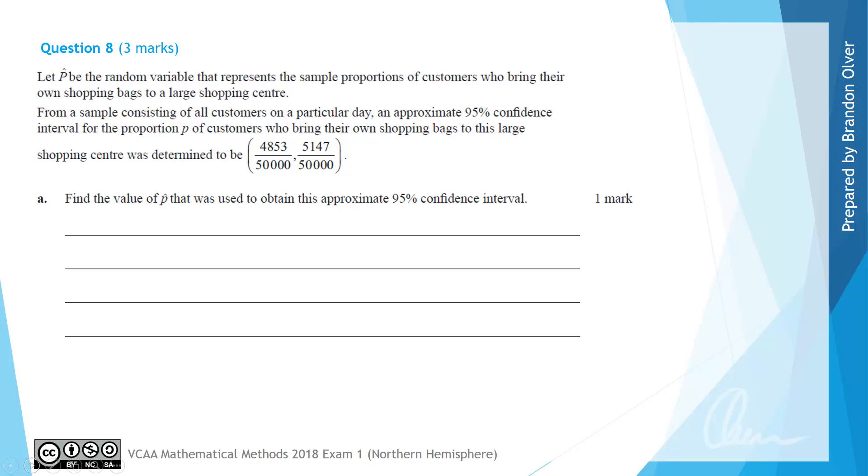For Part A, we are asked to find the value of P hat that was used to obtain this approximate 95% confidence interval, where P hat is the statistic for the sample proportion.